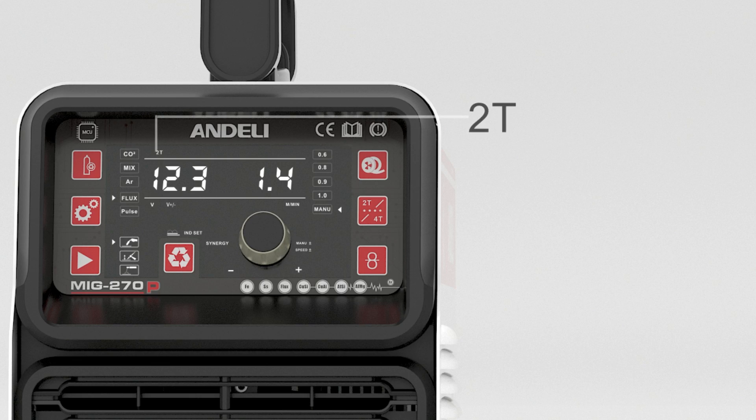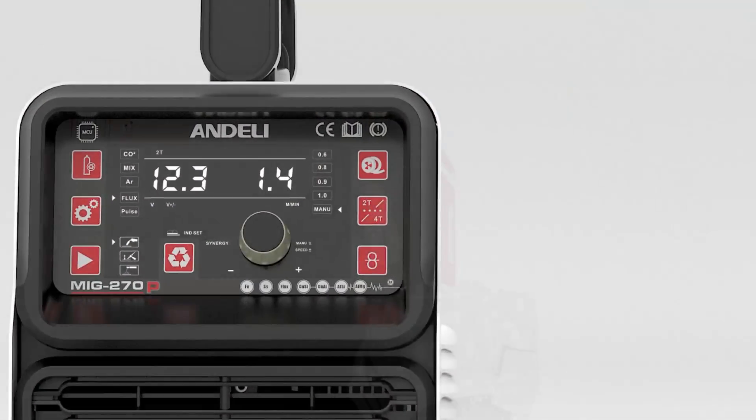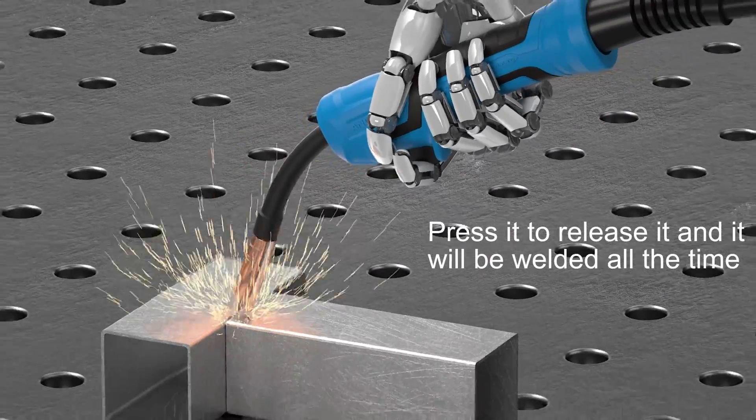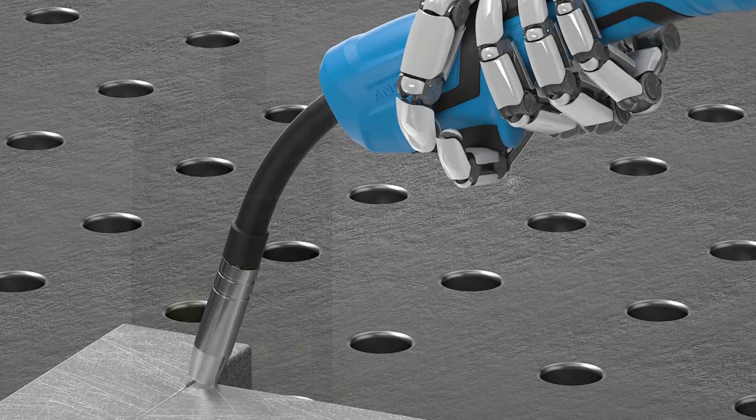2T mode: press and weld, release and close. 4T mode: press to release and it will weld continuously, press again to release and it will be closed.